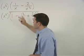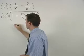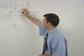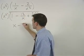x squared times 1 over x is x, and x squared times negative 2 over x squared is negative 2.